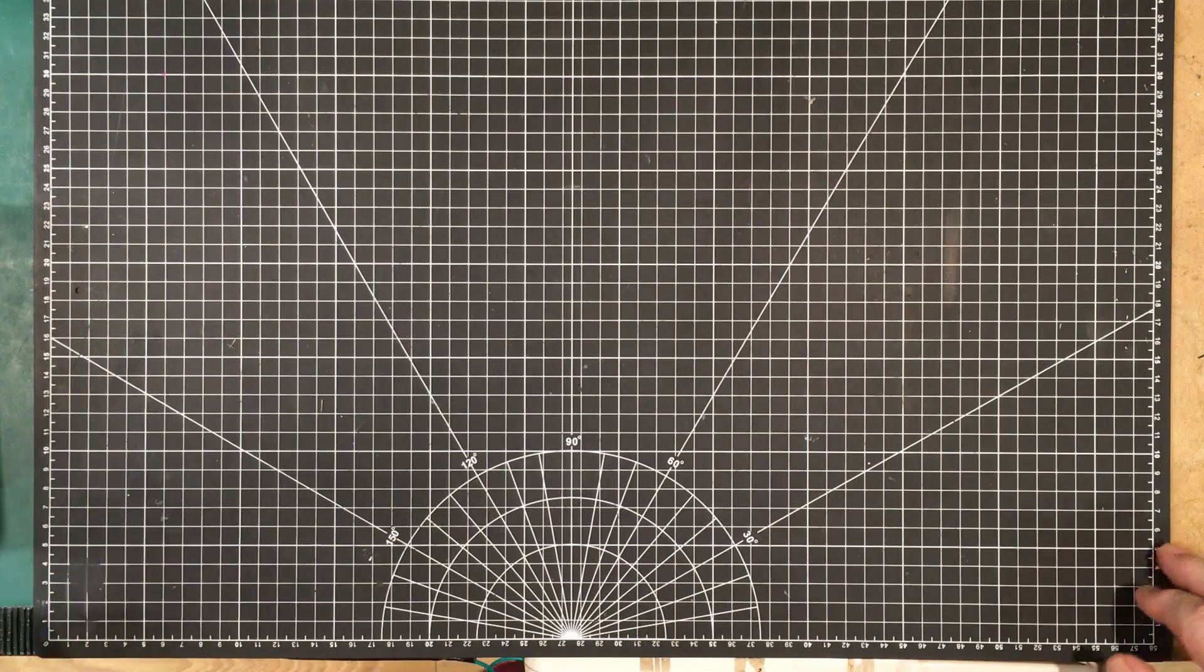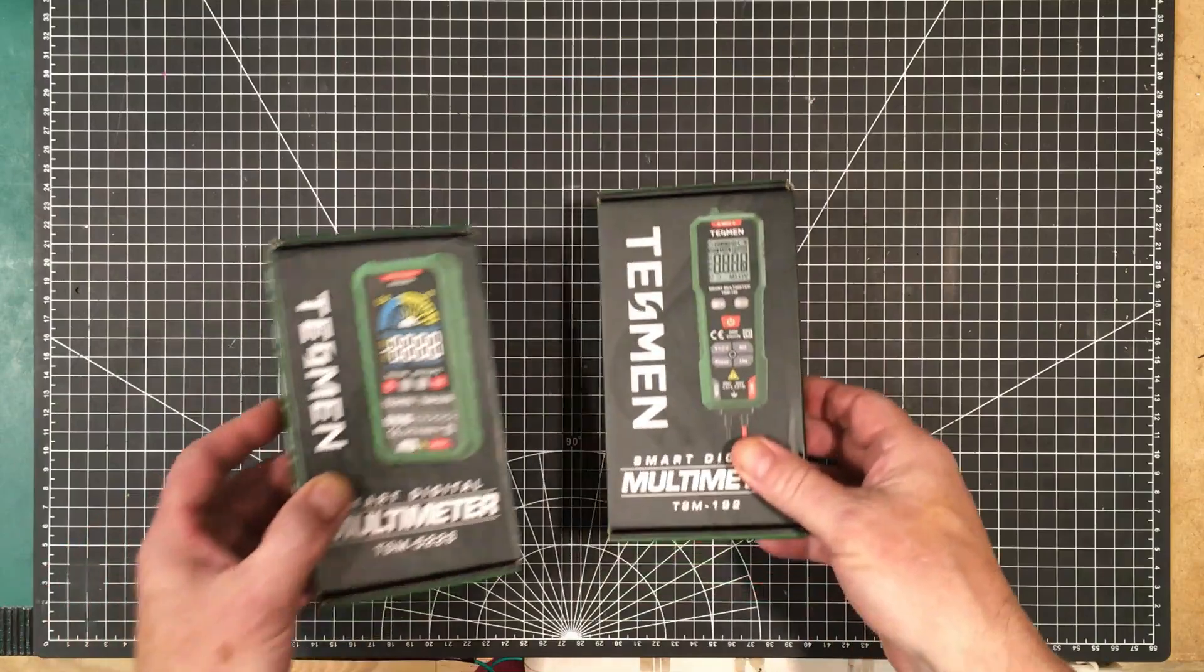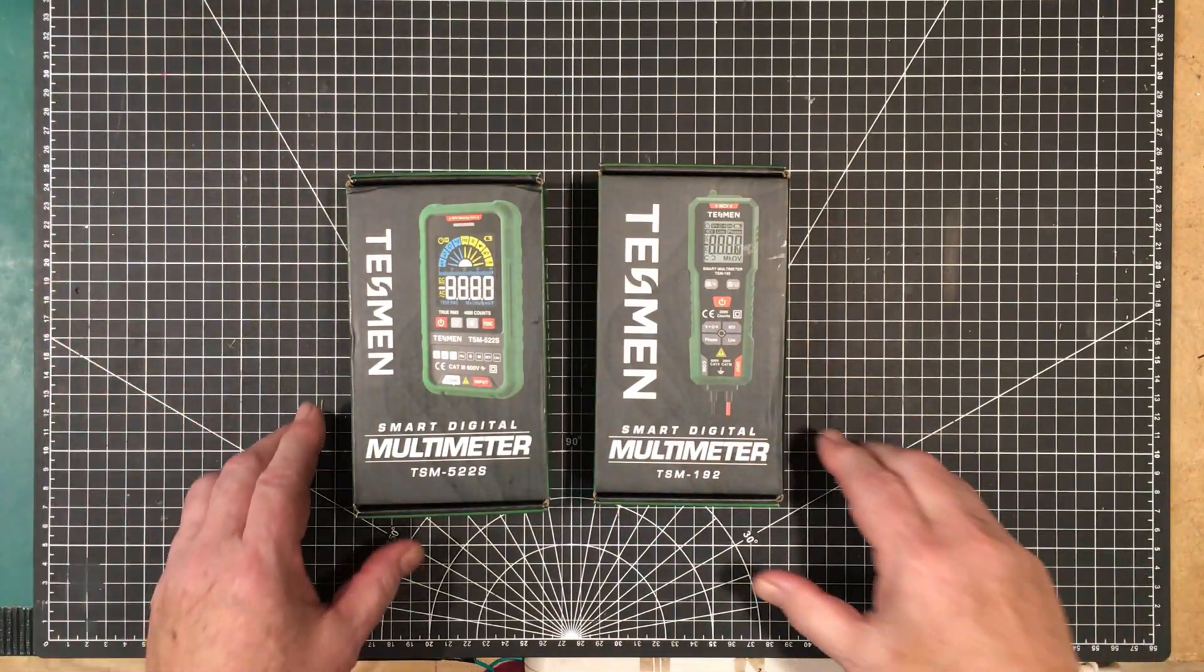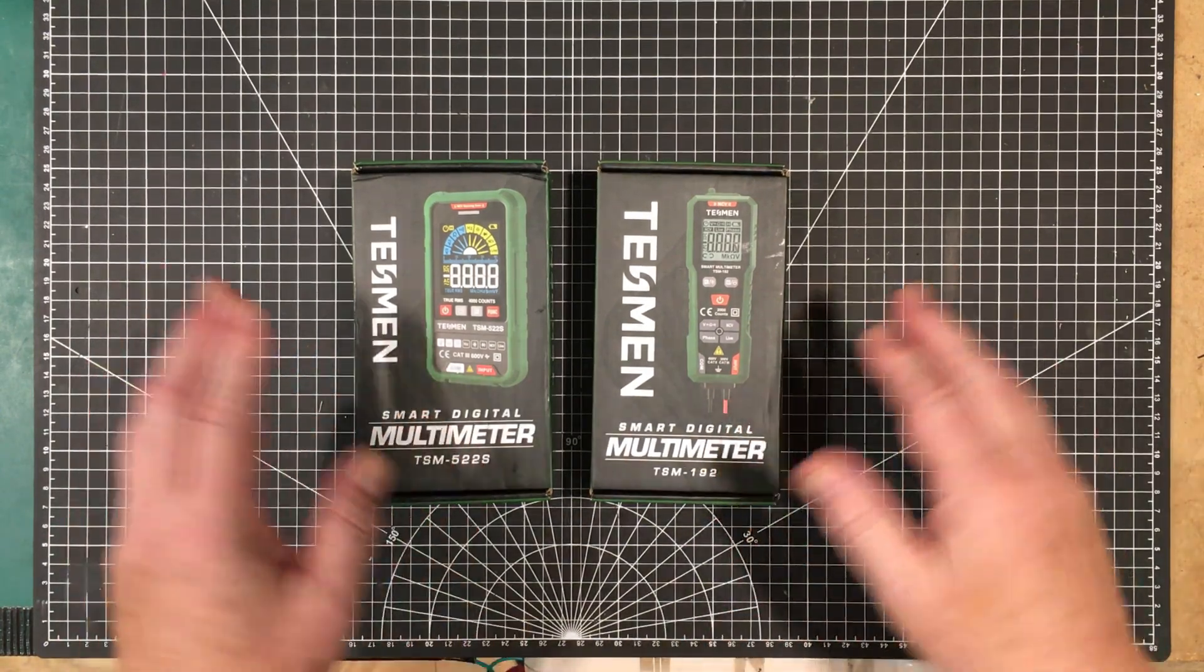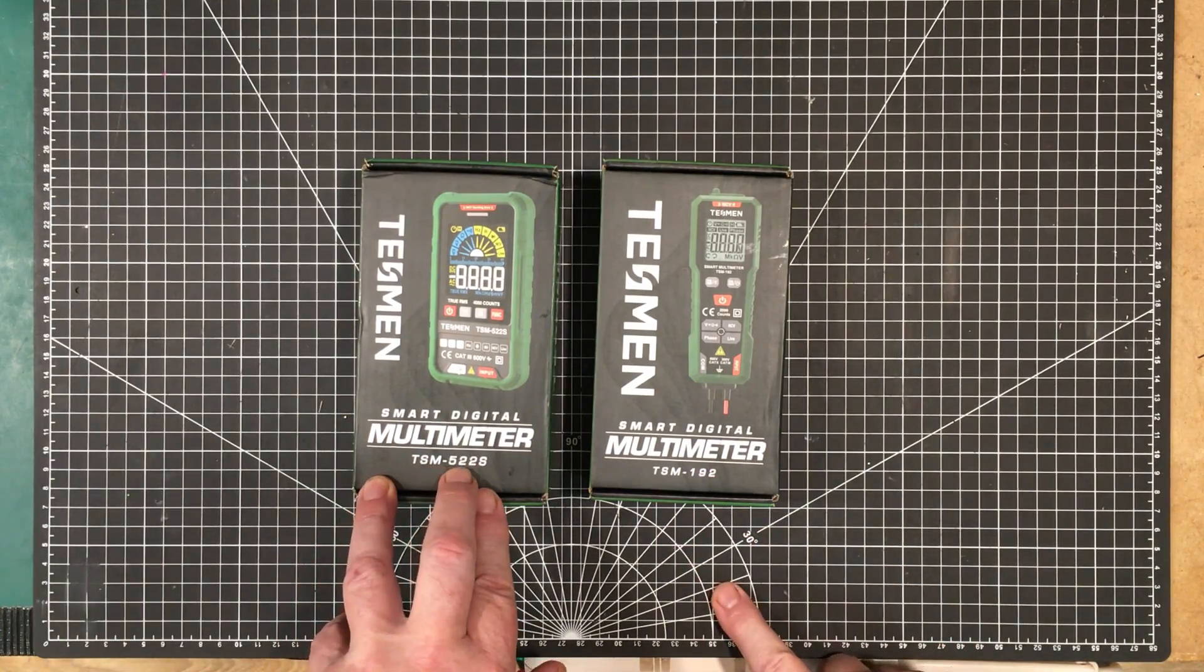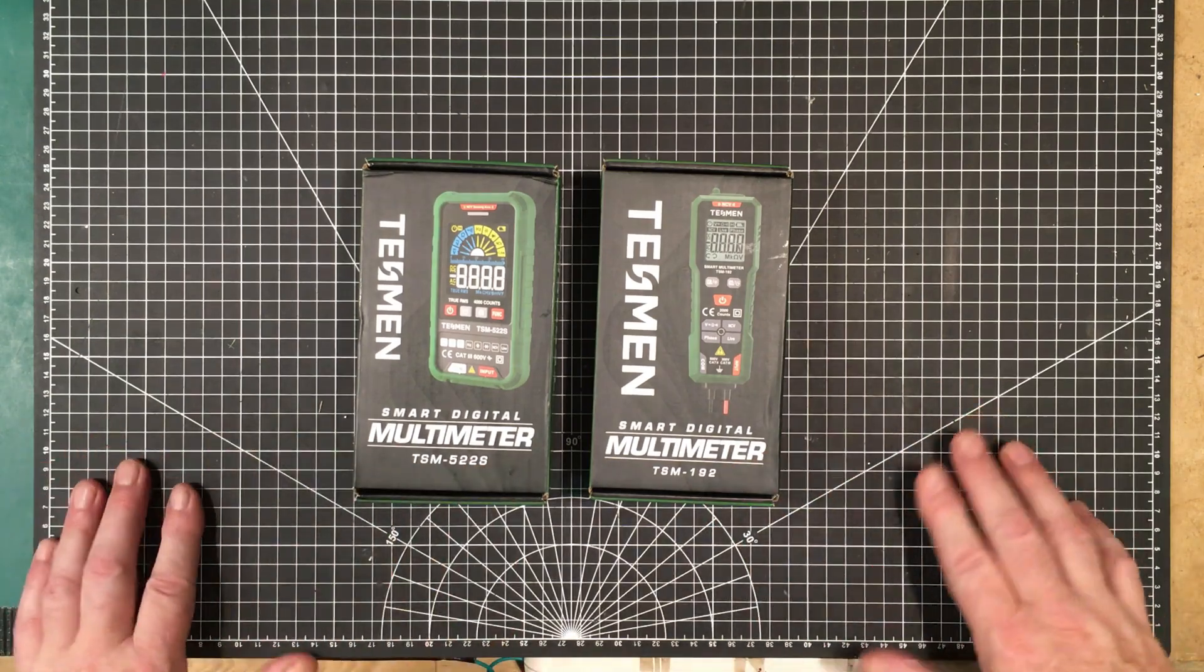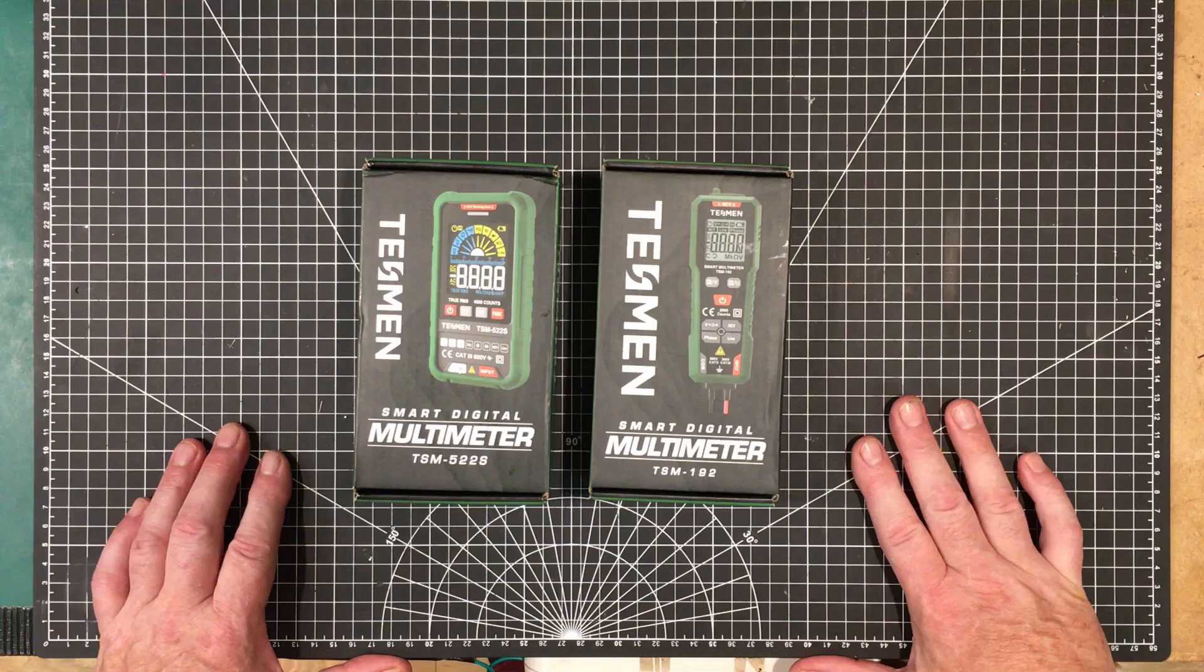Welcome back to lab folks. So today what we have for you, our friends over at Tessman have sent us over a couple of meters to test out. Now they list both of these meters as homeowners meters, handyman meters, and they're both smart digital meters. This one's the TSM-522S, this one's the TSM-192. So let's have a quick look at them to see if they do indeed fill the role of a handyman's meter.